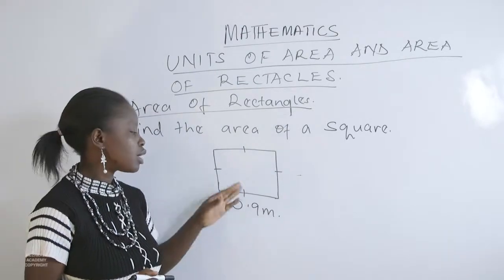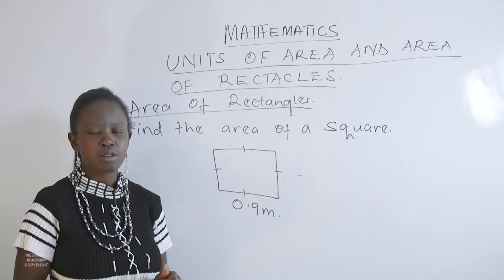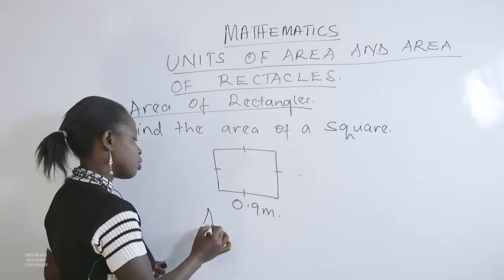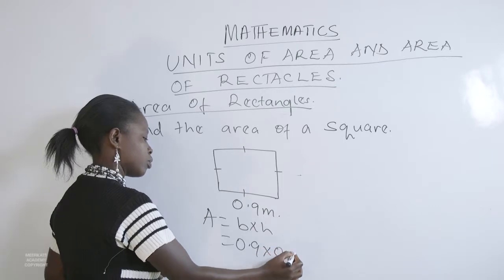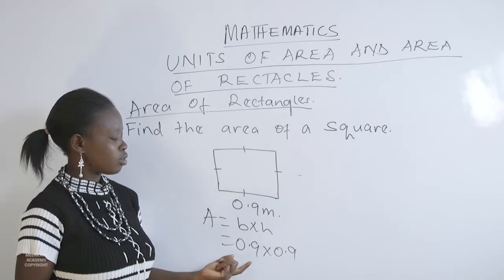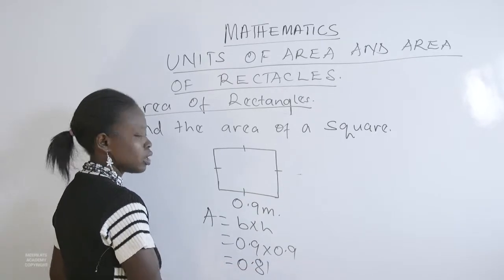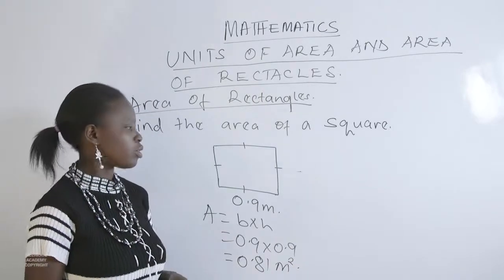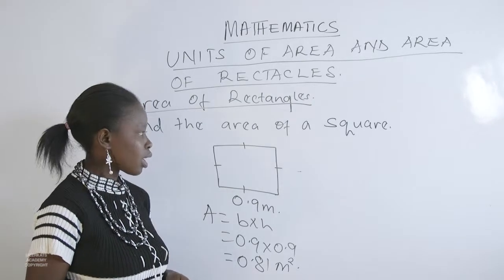Next, we have a square with sides of 0.9 meters. The area is given by base times height: 0.9 times 0.9, which gives us 0.81 square meters. So the area of this given square is 0.81 square meters.